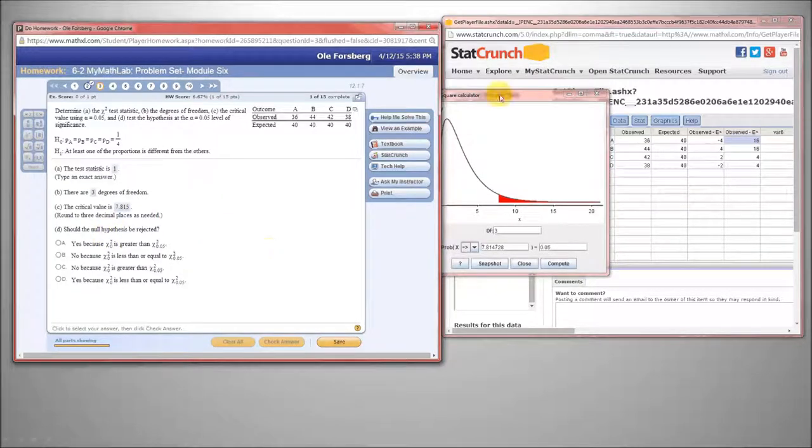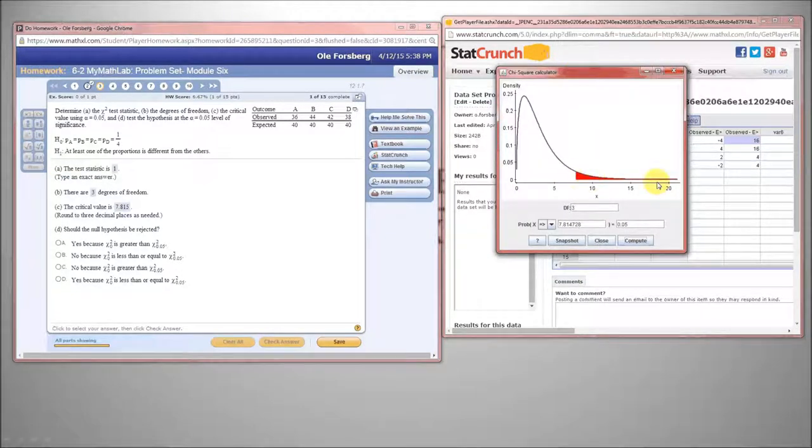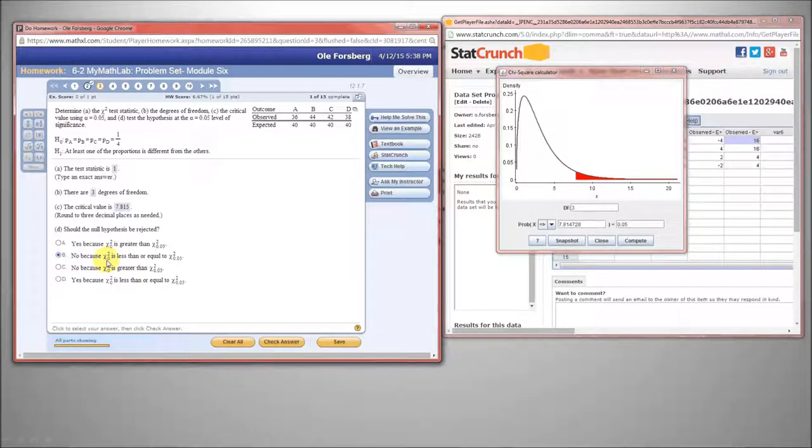And now, should the null hypothesis be rejected? Here's the rejection region. It's everything greater than that 7.814275. We observed a 1. 1 is less than our critical value. So, no. Because what we observe is less than our critical value.